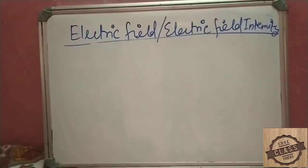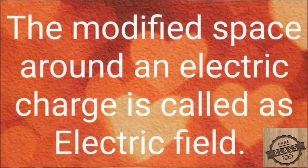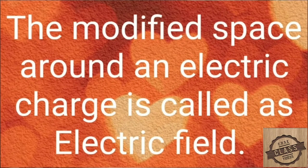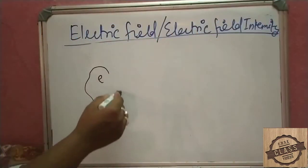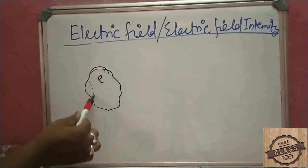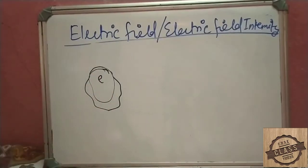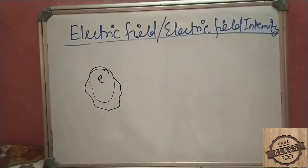Electric field and electric field intensity. How do you define the modified space around an electric charge? It's called the electric field. It means that the electric charge has an area around it — every place is within the area of the electric field. For example, a cricket player stands in a stadium — there is a field in the stadium. Similarly, the modified space around an electric charge is known as the electric field.